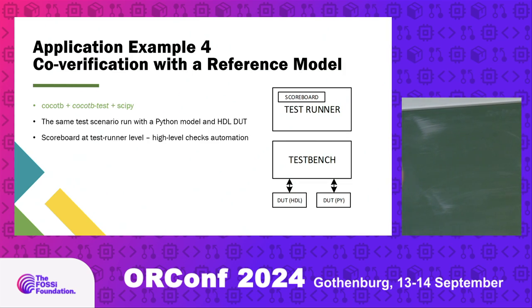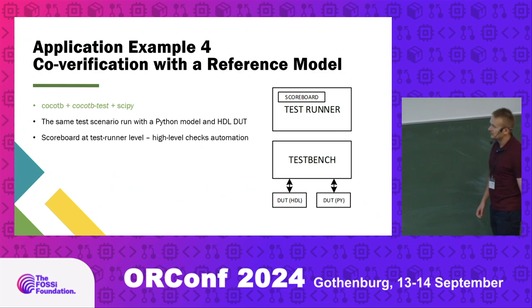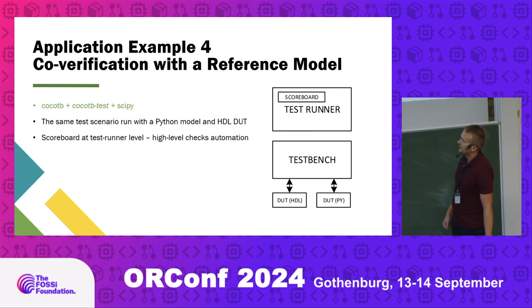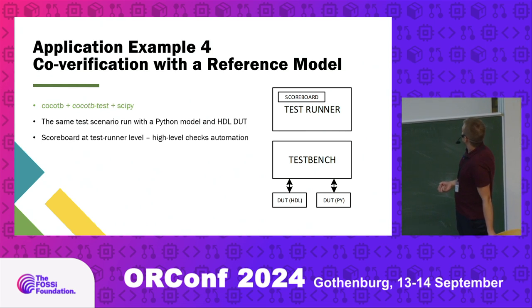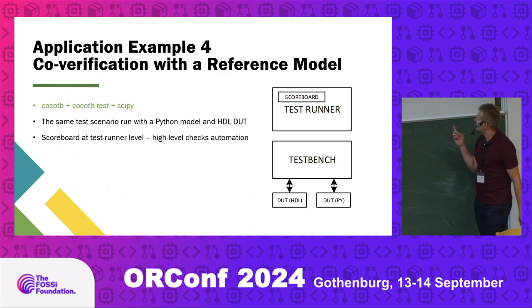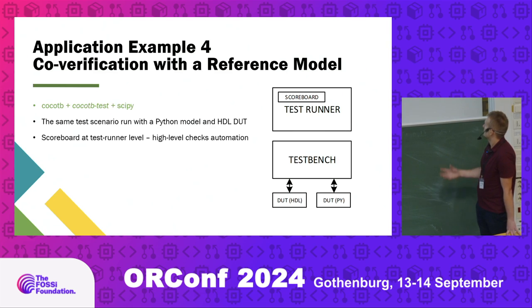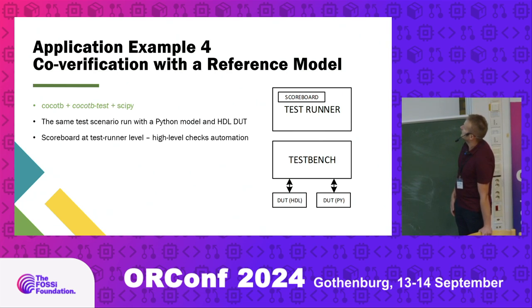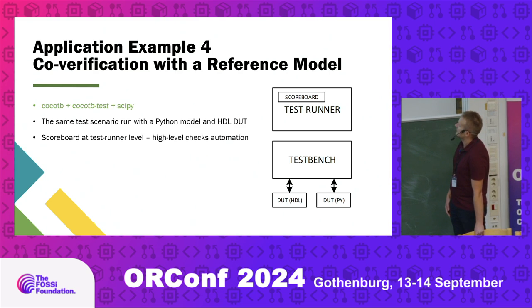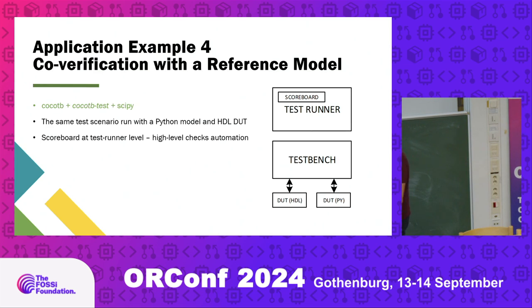Another example is co-verification with a reference model. Usually in UVM, the reference model is part of your test bench. Instead, you can choose whether your DUT is in HDL or in Python - meaning you have exactly the same test bench working on your reference model and on your actual HDL. That's very powerful because you don't need to write additional tests for your reference model.